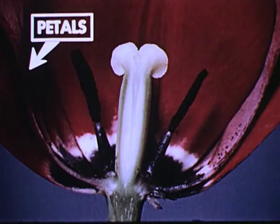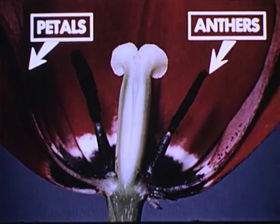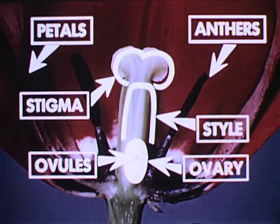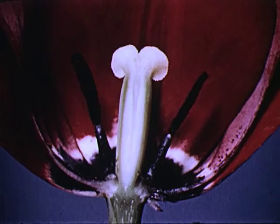This tulip has been cut lengthwise to show its structure. The petals are these conspicuous colored parts. These ends of the stamens are called anthers. Anthers contain pollen. The pistil consists of the stigma, the style, and the ovary. Inside the ovary are ovules containing eggs. When fertilized by pollen, these eggs develop into mature seeds.